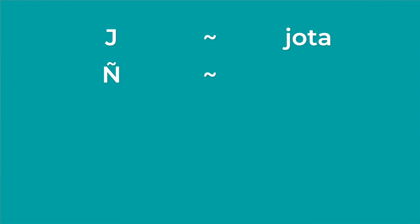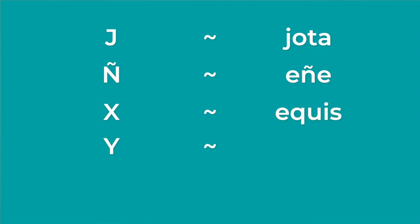Now, there are only five letters remaining, and these are the letters you have to memorize by heart. You may want to practice these more than the rest, because we can't logically derive them from the English alphabet like we can with the other 22. We have J, which is HOTA; EÑE, which doesn't have an equivalent in English — it's simply known as EÑE; then X, which in Spanish is EQUIS; then Y; and then Z.